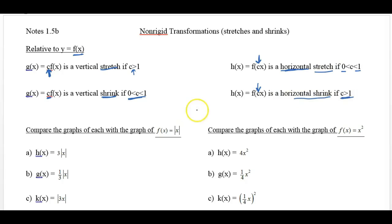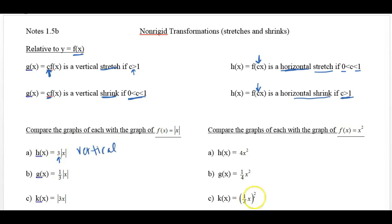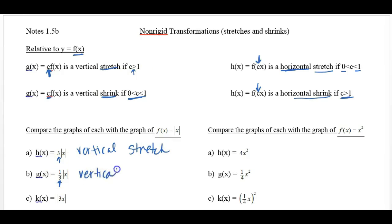Let's look at example a: compare the graphs of each function to f of x equals the absolute value of x. What is this 3 out here doing? Well, it's vertical — we know it's vertical because it's on the outside. And since it's greater than 1, it is a vertical stretch. Now notice this one: 1 third is on the outside of the function, so it's vertical. But 1 third is between 0 and 1, so this is a vertical shrink.